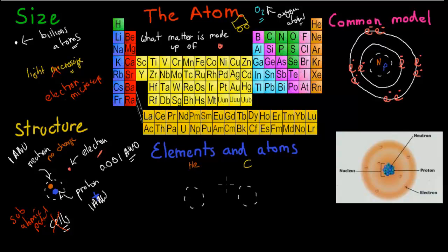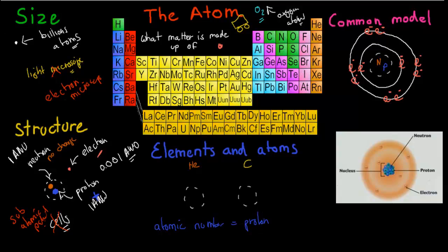Moving on to the next stage. What I want you to know in this section is how elements and atoms are linked. Each element has its own atomic number, and the atomic number is essentially the number of protons. For example, if we have the element helium, we can find it here, and it has the atomic number of 2. That means it's going to have 2 protons, because atomic number equals protons. So every helium atom will have 2 protons.